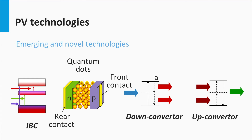Third generation PV technologies are based on various concepts trying to beat the Shockley-Queisser limit, which we will discuss in great detail in week 6. Third generation PV technology covers a wide range of novel and innovative ideas, the most successful being multi-junctions. Most of these ideas still need to be proven. Some of these ideas are quantum dot solar cells, absorber layers exhibiting multiple exciton generation, intermediate band gap solar cells, hot carrier solar cells, and spectral conversion using down-converters or up-converters.